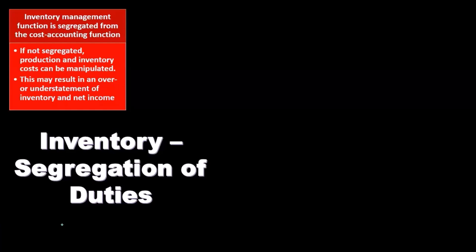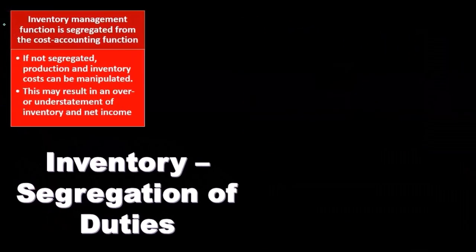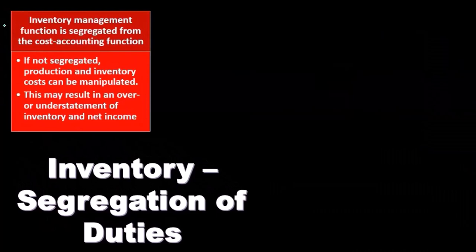Now we'll think of the segregation of duties with relation to inventory. Remember, this is going to be one of the major internal controls. When we think about internal controls, we have the segregation or separation of duties, meaning that the key components we're going to separate. Therefore, if there's going to be something like theft or fraud, it would have to involve collusion, where multiple people would have to get involved and plan in order to commit fraud.